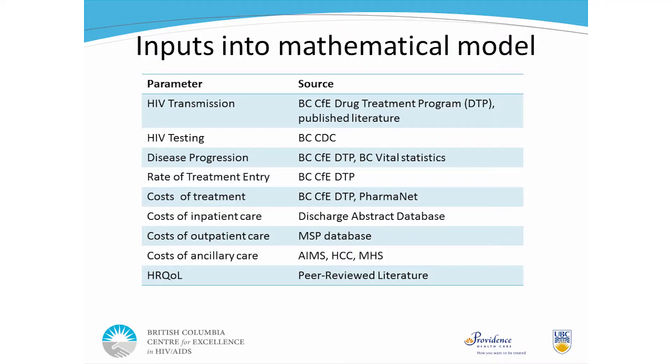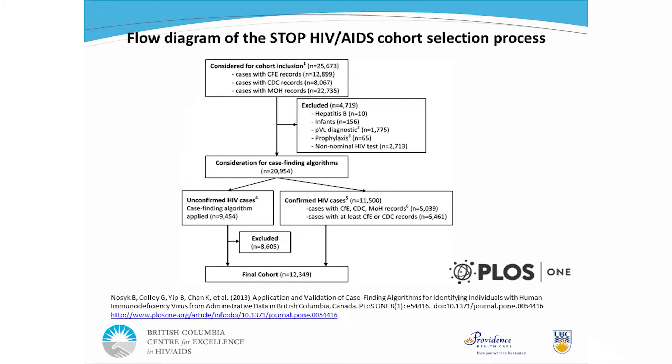The database we've put together is being used to build a model, one component at a time, which simulates the HIV epidemic at the population level in BC and can be broken down to focus on various subpopulations and regions. Our first round of data included nearly 10,000 unconfirmed cases identified with HIV-related physician visits or hospitalizations. We tested a series of case-finding algorithms derived for this purpose for identifying cohorts within administrative databases, and landed on a cohort of 12,349 people with HIV-AIDS covering 1996 to 2010. Some never formally engaged in care — some are new people to us at the Centre.